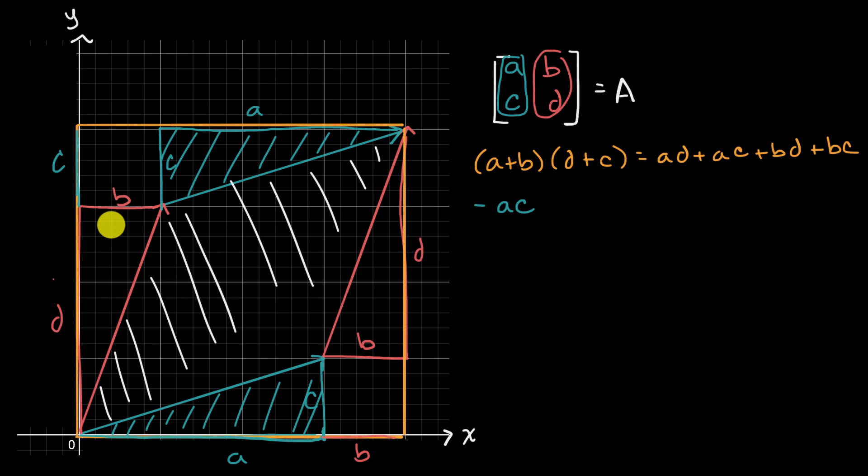And then we could do these two triangles. And the area of each of these triangles is BD over two, B times D over two, but add them together, their combined area is BD. So let's subtract that out, minus BD.